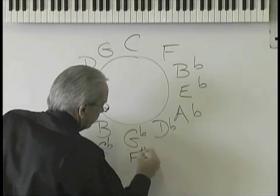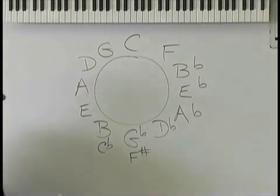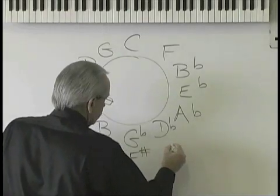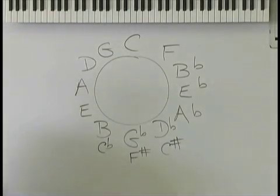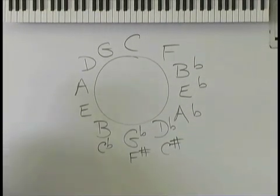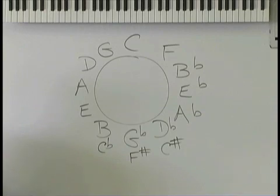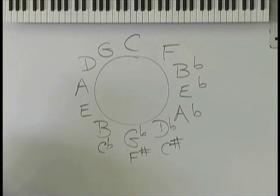They're the same notes. And under D-flat, put a C-sharp. That's the 15 keys. You only have 12 on a clock, but there's three that are the same. So if you're in the key of G-flat, you need that extra flat: B, E, A, D, G, and C-flat. Don't worry about it, because you're never going to play in those keys. If you are, you're better than me.